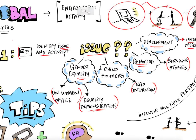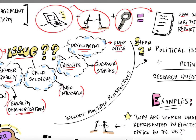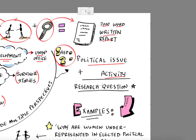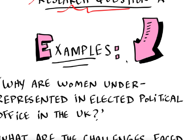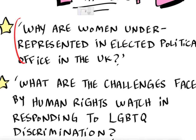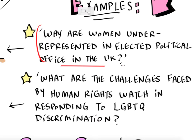The second step is to take that political issue and activity and form a research question from it, which is similar to what you would be doing with your Extended Essays. One example of a good research question is: why are women underrepresented in elected political office in the UK? We have the issue of women's empowerment and we're looking at political office, which would bring us to an activity where you'd talk to members of parliament — maybe talking to female MPs and seeing what their struggles were coming up through the system.